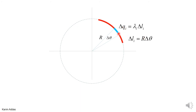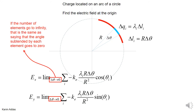The charge on an arc length equals the charge per unit length lambda times the arc length. From geometry, the arc length equals the radius R times the subtended angle delta theta. So we substitute delta Q with lambda times R times delta theta. This way we've expressed everything in terms of delta theta and theta. Similarly, we make delta theta go to zero because as the number of elements goes to infinity, the angle subtended by each element approaches zero. These are now the exact formulas for the x and y components of the electric field.